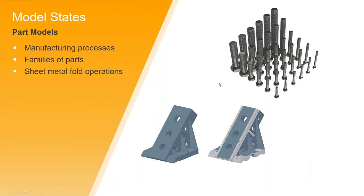In the part environment, you now have what's called Model States. A couple different ways you can work with Model States: manufacturing processes — maybe show all raw material, and then through the different model states, you can show that there's maybe some machining processes happening. Or in the case of a weldment, you could show maybe weld callouts within that weldment. And then family of parts — that's configurations, right? You could have 12 different configurations within your part file, and then depending on which model state you're calling out for, that piece part can be longer, wider, thicker.